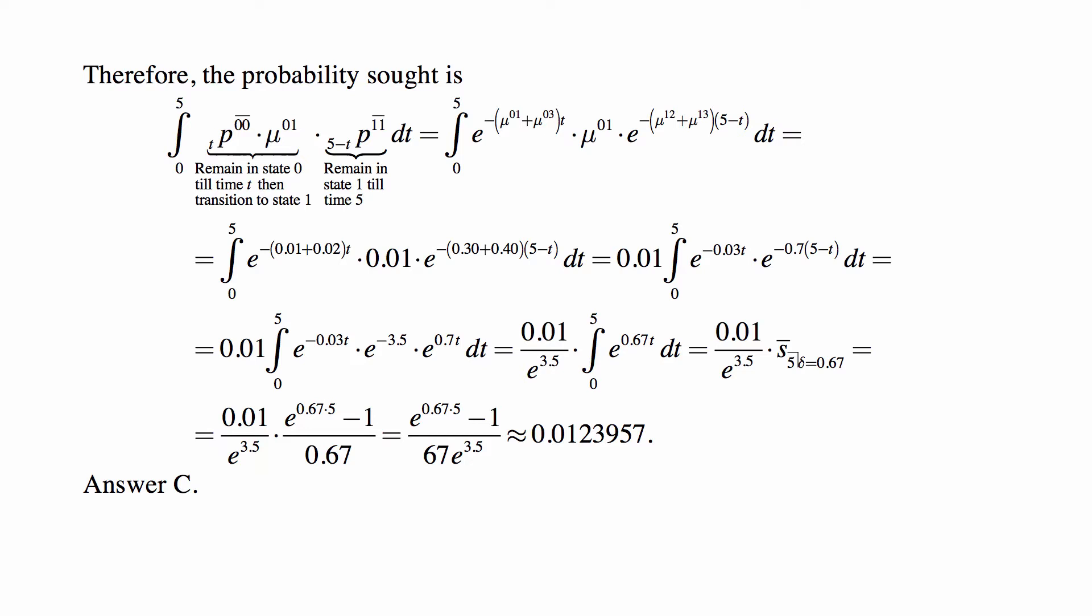And we end up with 0.01 times e to the minus 3.5, so 0.01 divided by e to the 3.5, times the integral from 0 to 5 of e to the 0.67t.